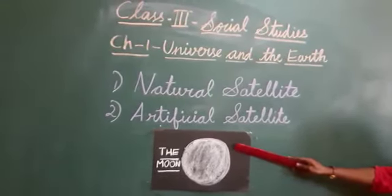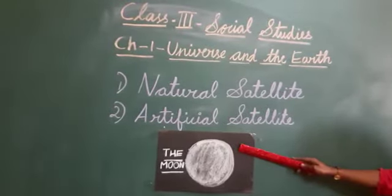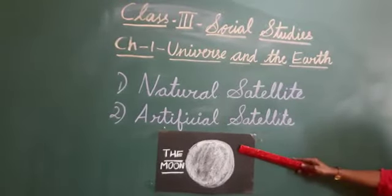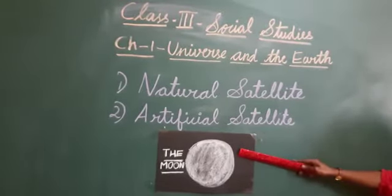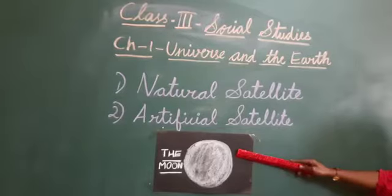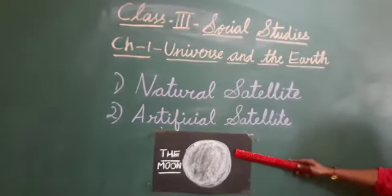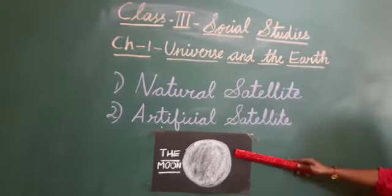Sometimes we are not able to see the moon at all. You know why? It is called the new moon, and we are familiar with it as Amavasya.